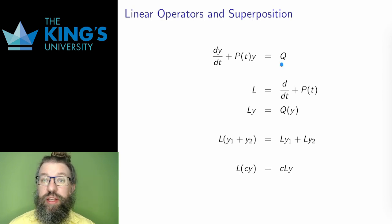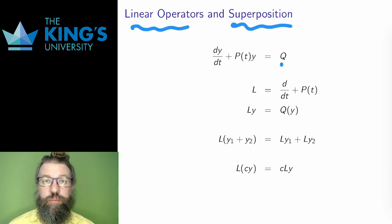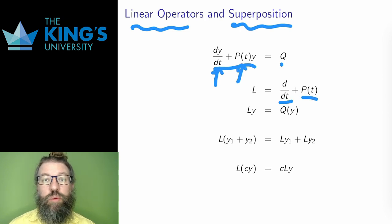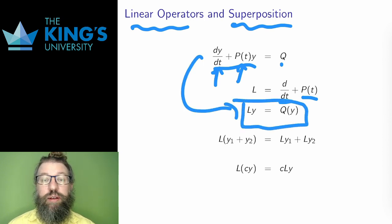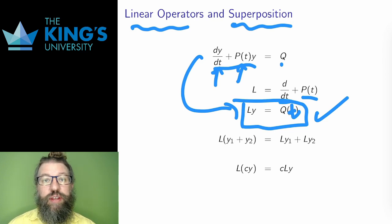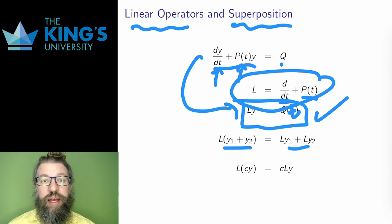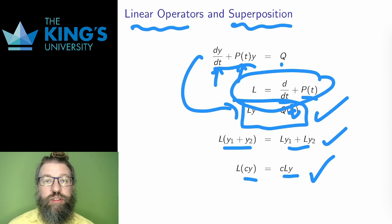What about the general case where there is a Q? In order to get to that case, I have to do something with linear operators called superposition. I'll write the left side of this linear equation as a differential operator — d/dt plus P — so the left side can be written as the linear operator L applied to the function y, and the equation becomes Ly = Q. This is a linear differential operator because it breaks up over sums and can pull out constants. Things are linear if they break up over sums and work well with constants.